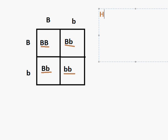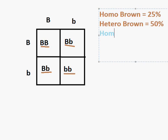And so what it is, we have one homozygous brown, that's 25%, heterozygous brown, 50%,